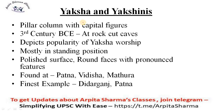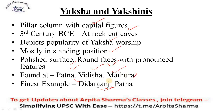Next are Yaksha and Yakshinis — pillar columns with capital figures discovered around the 3rd century BCE at the Barabar Caves. These depict the popularity of Yaksha worship and are mostly in standing position with polished surface, round faces, and pronounced features. They can basically be found at Patna, Vidisha, and Mathura. The finest example of a Yakshinis sculpture is at Didarganj, Patna.